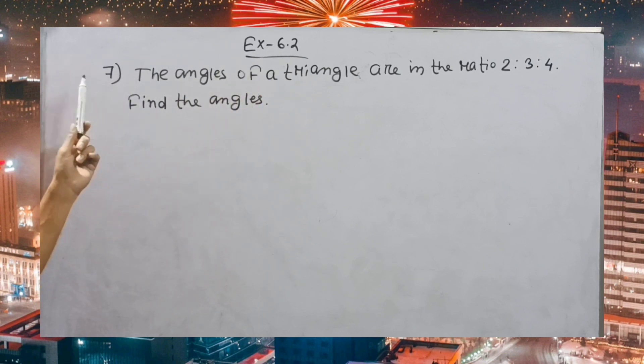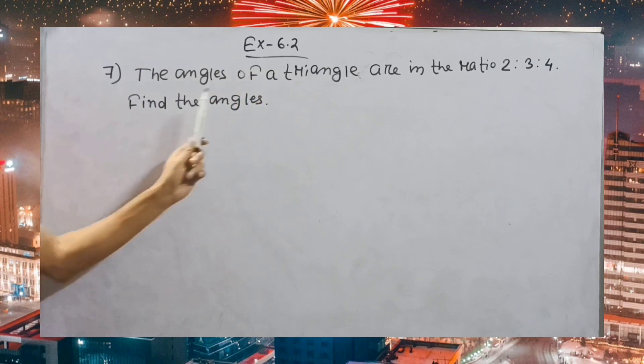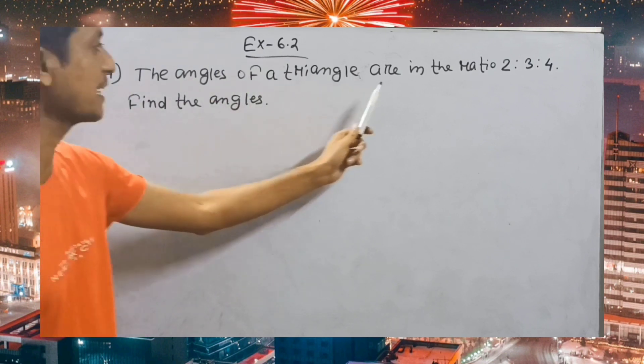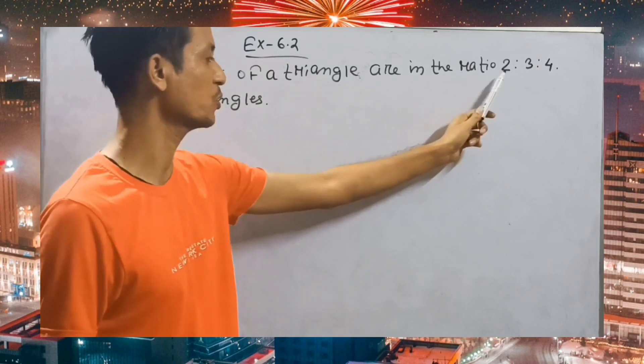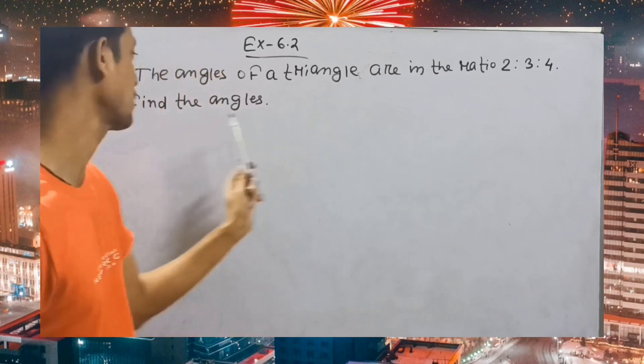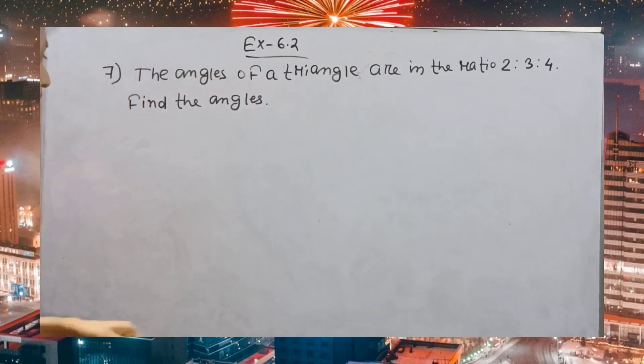Exercise 6.2, Question number 7. The angles of a triangle are in the ratio 2:3:4. Find the angles.